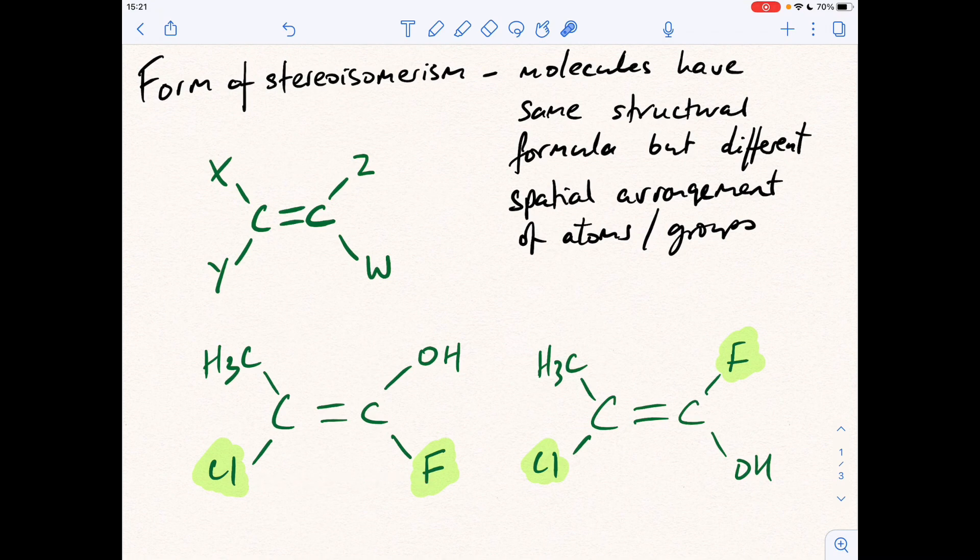Priority groups are both locked down on this side of the double bond on this one, whereas on this isomer on the right, the priority groups are locked ones down, ones up. So which one's which? Well, when the priority groups are on the same side of the C=C double bond, you get the Z isomer from the German word Zusammen, which means together. Whereas when the priority groups are on opposite sides of the double bond, so that one's down, that one's up, this is called the E isomer from the German word for opposite, Entgegen.